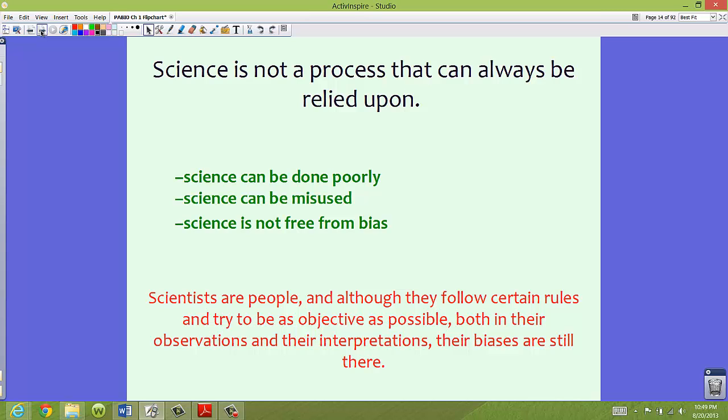Science is not a process that can always be relied upon. Now, unfortunately, there are some scientists out there or people who claim to be scientists that do their experiments poorly. So science can be done poorly, it can be misused, and science is not free from bias. So everybody's human, and it's our job as scientists to make sure that our testing and our experiments are free from bias as much as possible. There's been cases where scientists have claimed that they have cloned human cells, when in fact they really didn't. Science can be done poorly. Maybe they do not ask permission when working with animals or working with certain human tissue, and that's a problem.